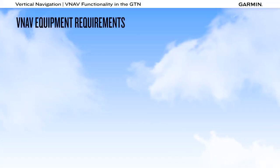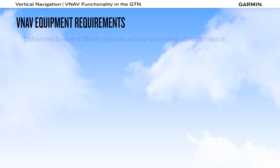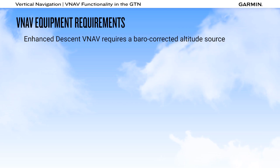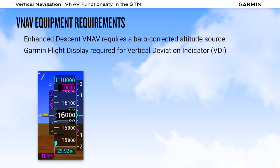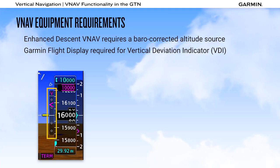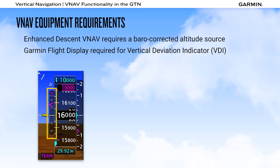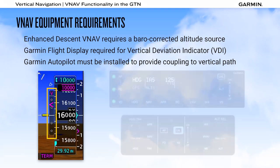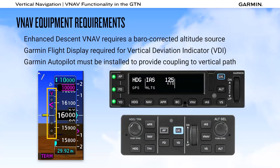To enable VNAV functionality on the GTN, there must be a baro-corrected altitude source, which provides the necessary altitude information to the system. To enable the display of a vertical deviation indicator, or VDI, you need a Garmin flight display, such as a G5, G3X, G500-600, or TXI. To enable autopilot coupling to the VNAV path, you must have a Garmin autopilot installed.